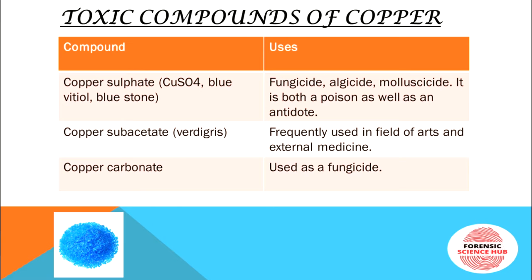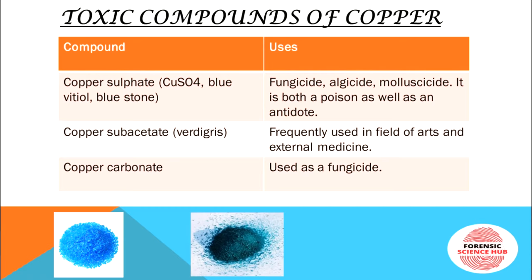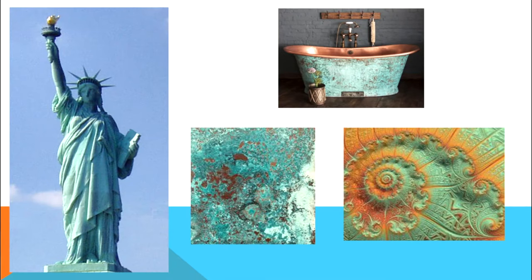Next is copper acetate, also known as verdigris, frequently used in arts and external medicine. Then there is copper carbonate, used as a fungicide. Copper carbonate is a blue-green colored compound forming part of verdigris. Verdigris forms as a bluish-green deposit on copper metals due to the oxidation reaction of copper with air.